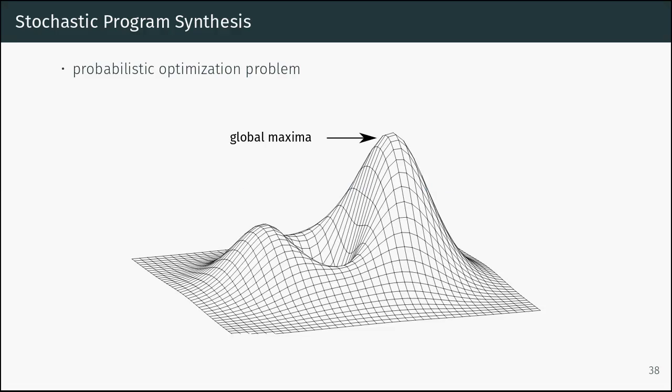We consider program synthesis as a probabilistic optimization problem. Each point on a surface is one possible program. We have a global maximum — a program with exactly the same IO behavior. We can assign a concrete score for how close we are to the global maximum. We start somewhere, have a score, and try to improve until we reach a score of one, i.e., the global maximum.